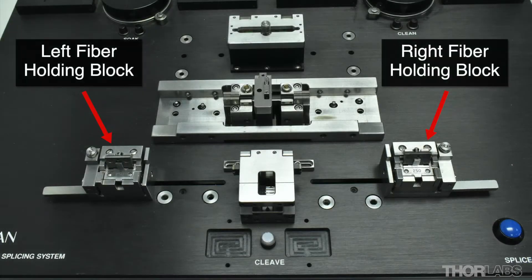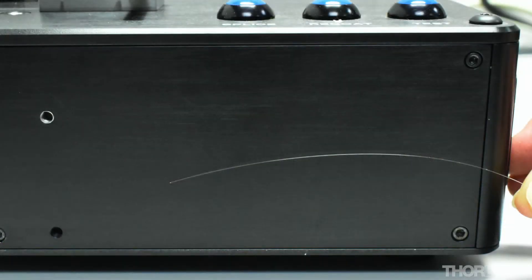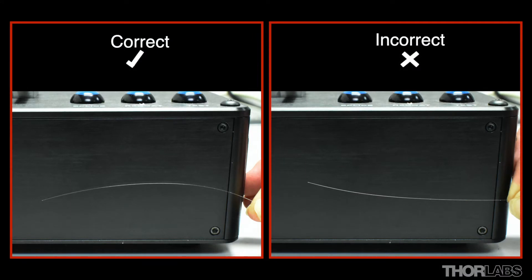Left and right fibre holding blocks are used to secure the fibres as they are moved around the unit. It is important that the curl of the fibre is downwards when loaded into the fibre holding block.